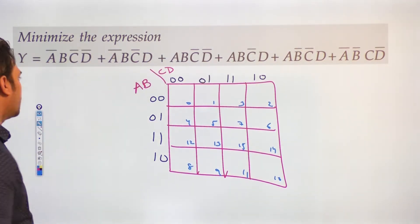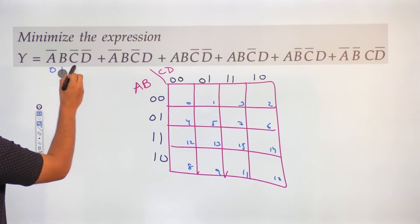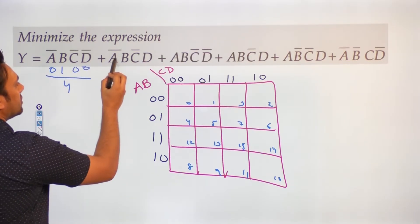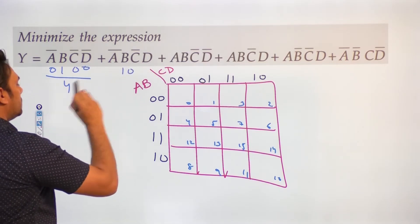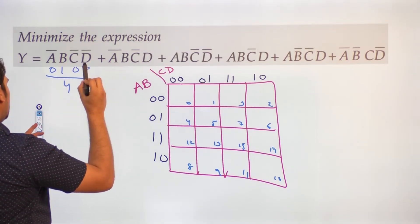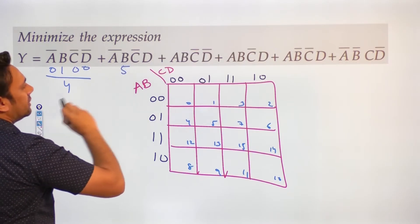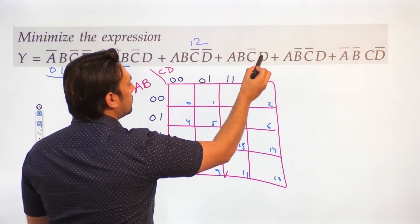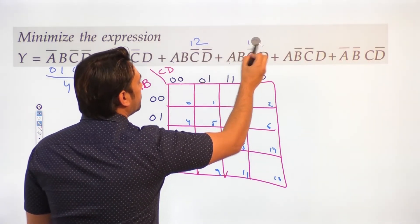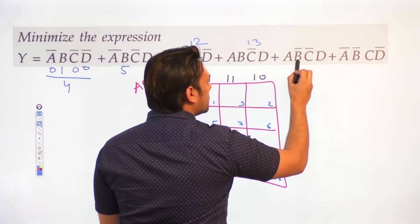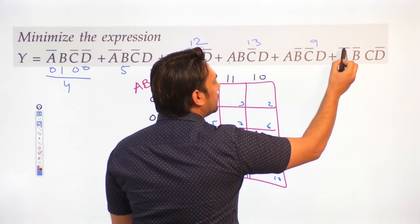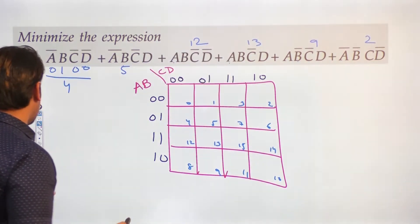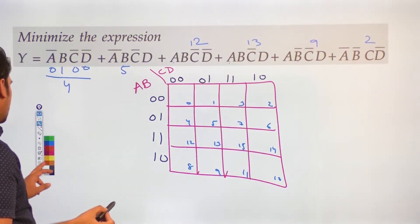Now let us look at the expression. This is representing 0100, which is 4. This is 0101, which is 5. This is 1100, which is 12. This is 1101, which is 13. And this is 1001, which is 9. Then 0010, which is 2.